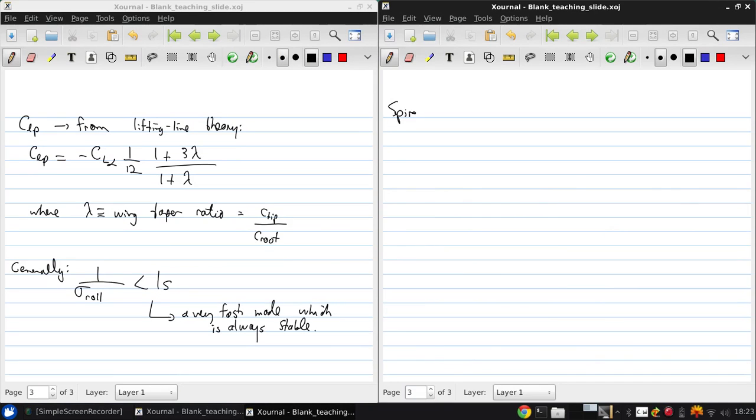Now let's look at the spiral mode approximation. Here we neglect roll and assume we have pure yawing motion.